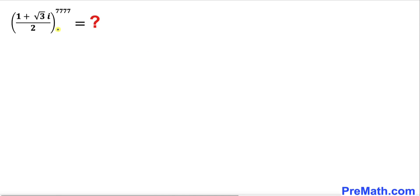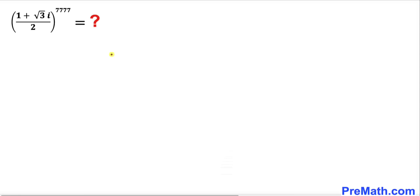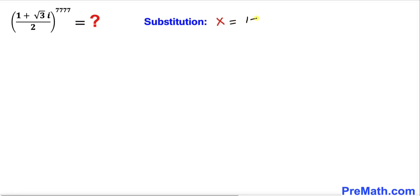Welcome to pre-math. In this video we are going to find the value of (1 + √3·i)/2 to the power 7777. Please don't forget to give a thumbs up and subscribe. Let's get started. The first thing we are going to do is focus on the base. To make our job easier, let's set x equal to (1 + √3·i) / 2.